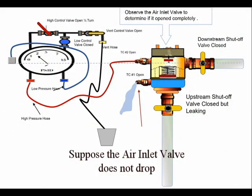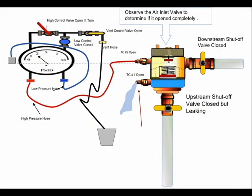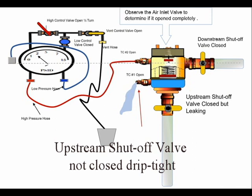Suppose the air inlet valve does not drop. It could be that the air inlet valve is stuck. It also could be that the upstream shutoff valve was not closed, or closed but not drip tight.